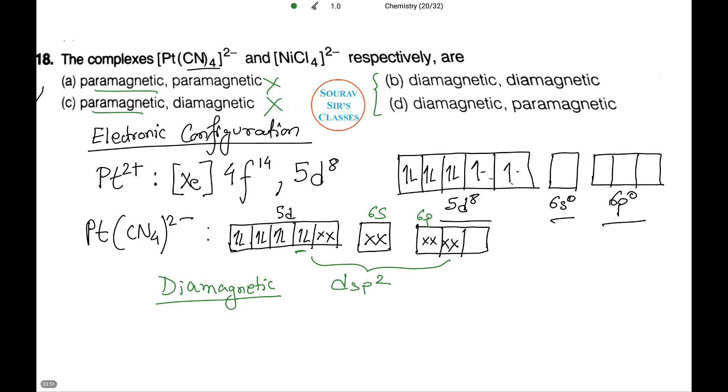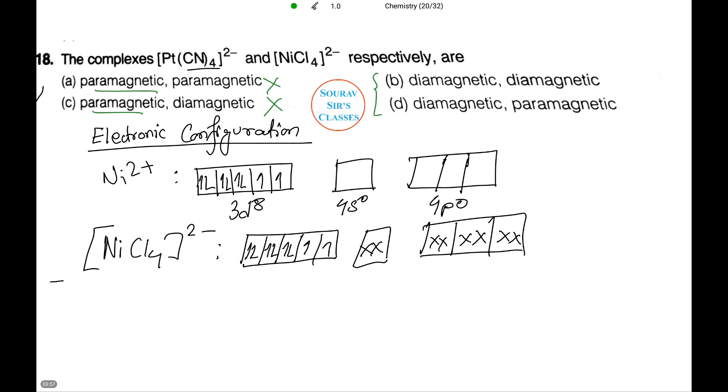Notice, option A and option C can be removed since we have already obtained that platinum cyanide ion is diamagnetic. Thus, it will be either between B or D. Let's check out nickel chloride. Following is the case for nickel chloride. Notice, there are unpaired electrons in nickel ion as well as NiCl4. This is because chlorine is a weak ligand. Thus, we have an sp3 kind of hybridization. This complex is paramagnetic due to presence of two unpaired electrons.